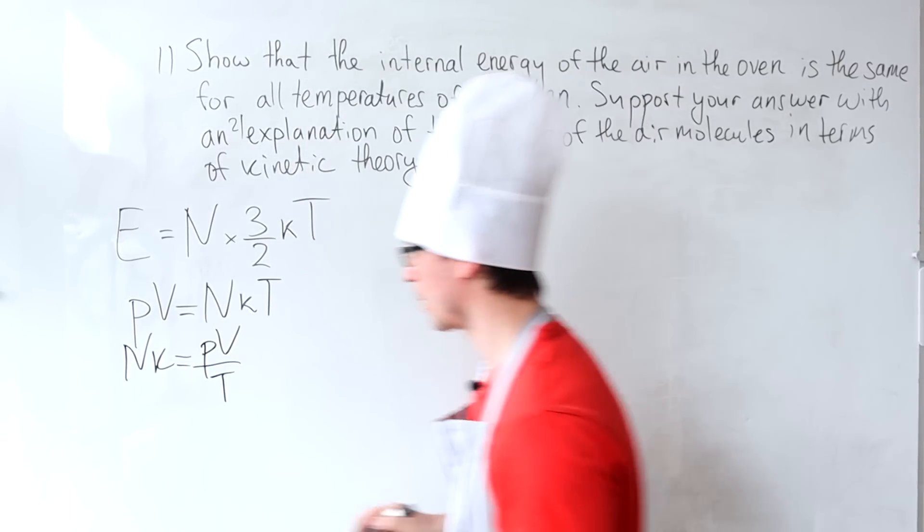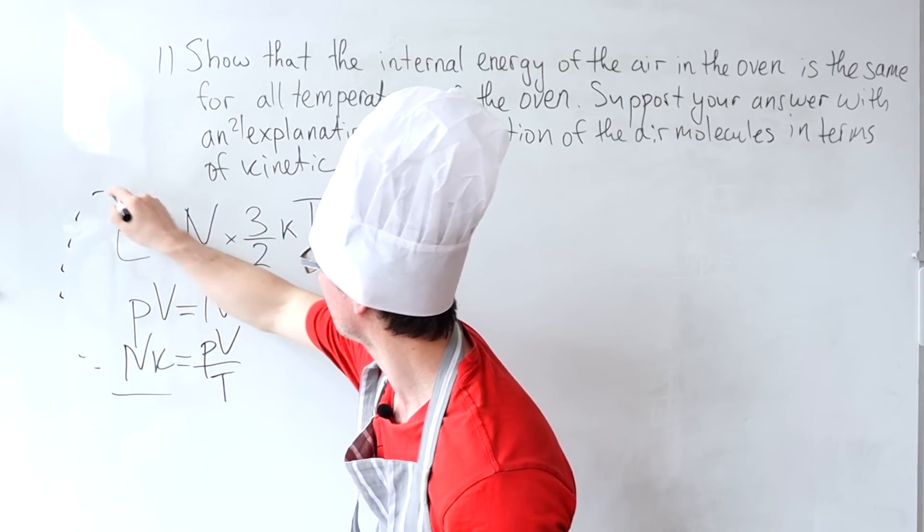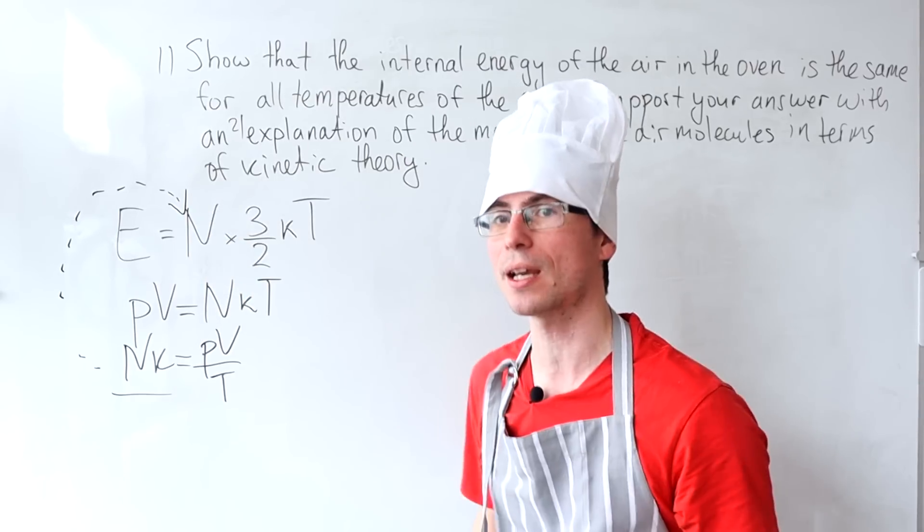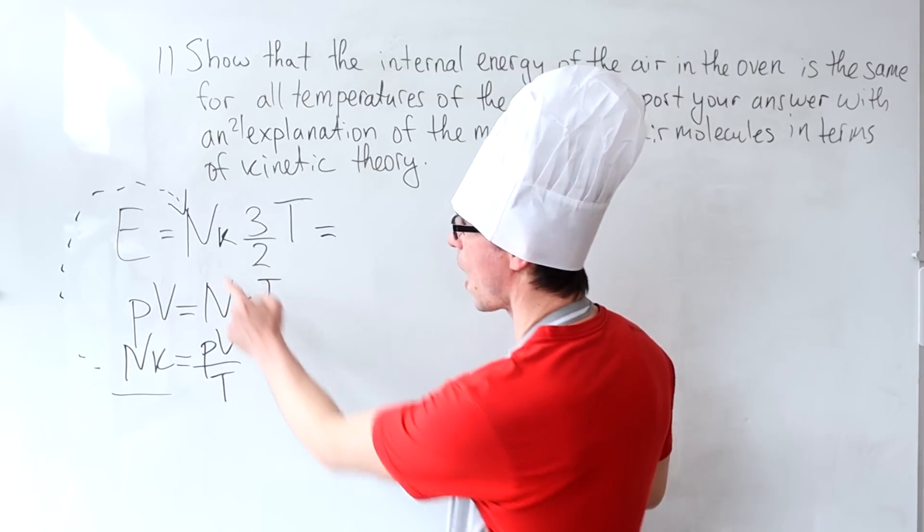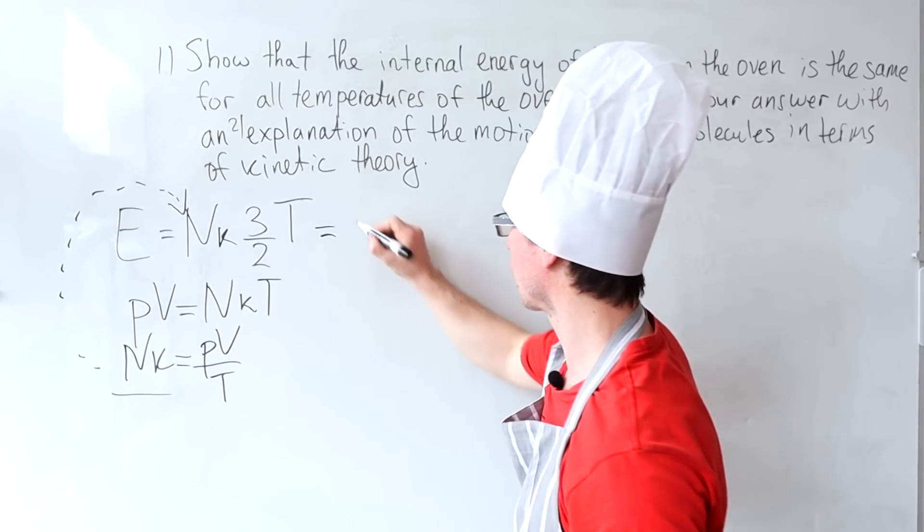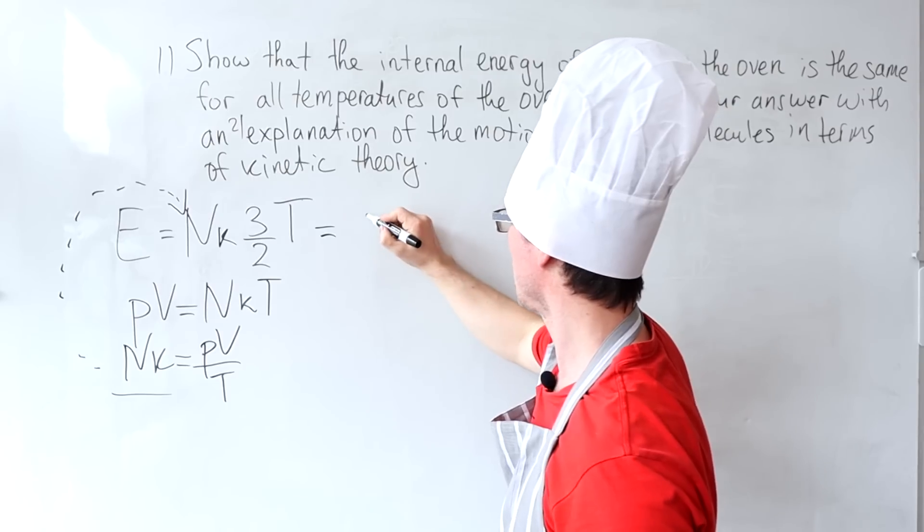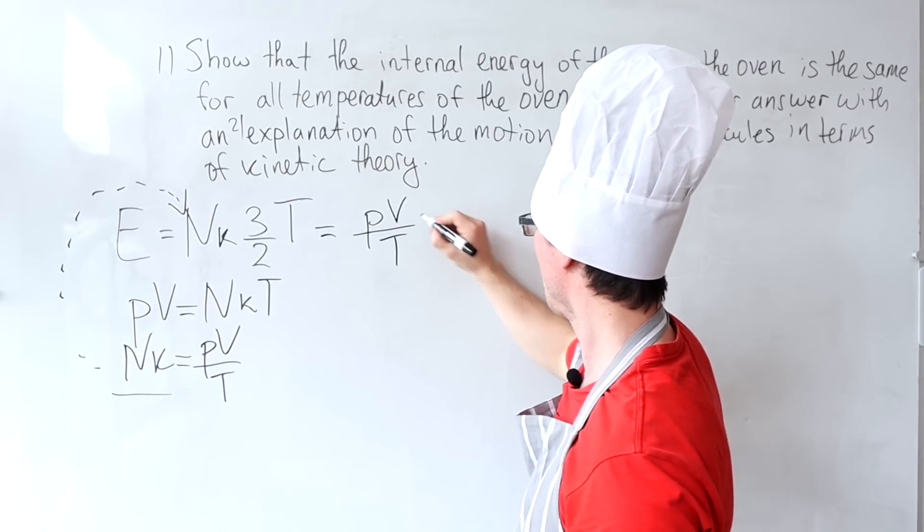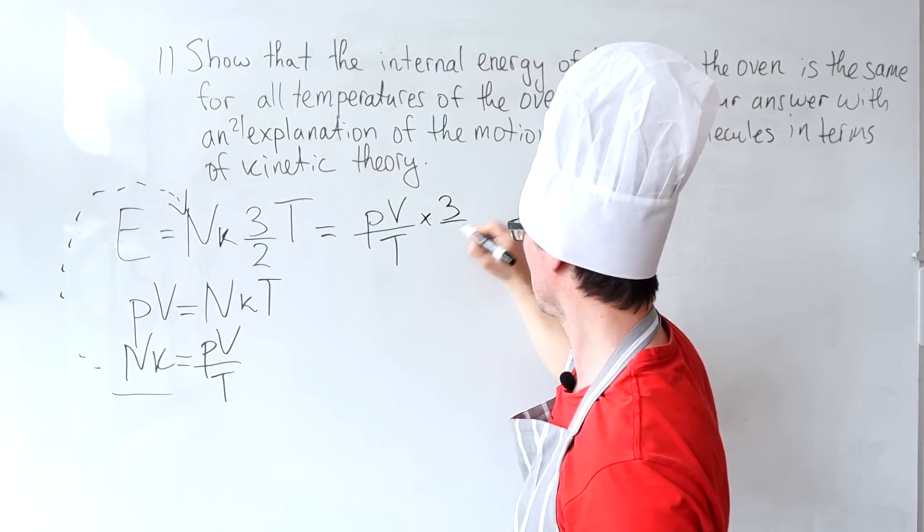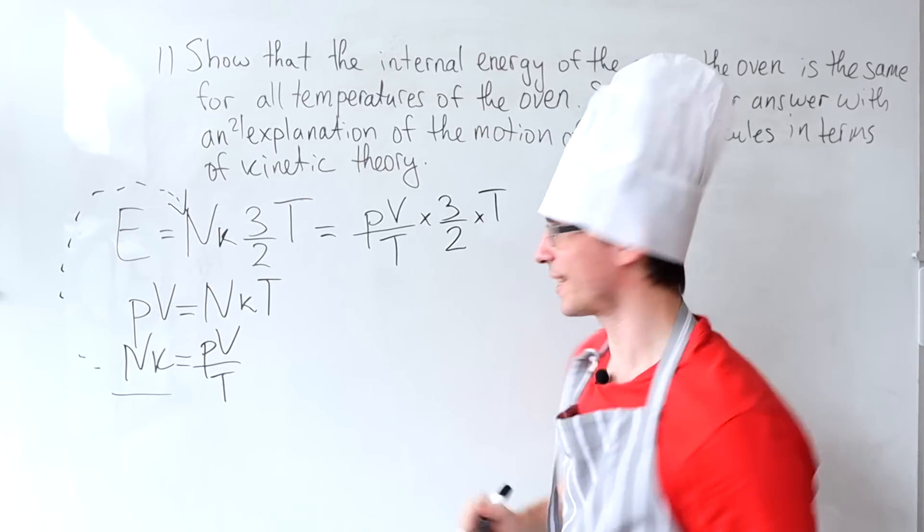And now I'm going to take this in and I'm going to serve that into here. This is part of our recipe. And now rather than N times K, I'm going to write that the internal energy is equal to PV over T multiplied by 3 halves multiplied by T.